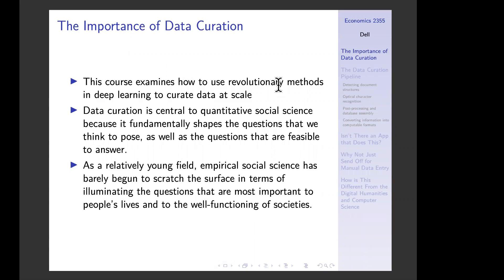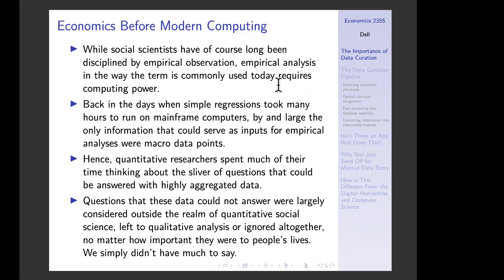The objective of this course is to use revolutionary methods from deep learning to be able to process data at scale. Data curation is super central to what we do as economists or social scientists, because the data you have access to is going to fundamentally shape the questions you think of in the first place, and certainly condition which questions are feasible to answer. Empirical social science is a pretty young field and we've barely begun to scratch the surface.